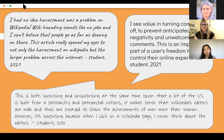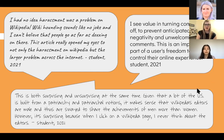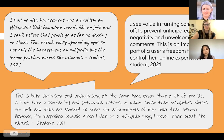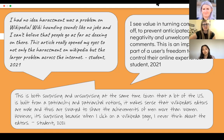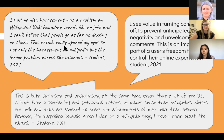In response to the trolling readings, students said things like: 'I had no idea harassment was a problem in Wikipedia — wiki hounding sounds like no joke, and I can't believe people go as far as doxing on there. This article really opened my eyes, not only to harassment on Wikipedia, but the larger problem across the internet.' And: 'This is both surprising and unsurprising at the same time. Given that a lot of the US is built from a patriarchy, it makes sense that Wikipedia editors are male and thus are swayed to share the achievements of men more than women. However, it's surprising because when I click on a Wikipedia page, I never think about the editors.' One of the successful parts of teaching about Wikipedia is getting students to really think about the source of their information and who is editing and writing these articles, pushing students to think about biases and who creates and disseminates information, even in a free environment like Wikipedia.